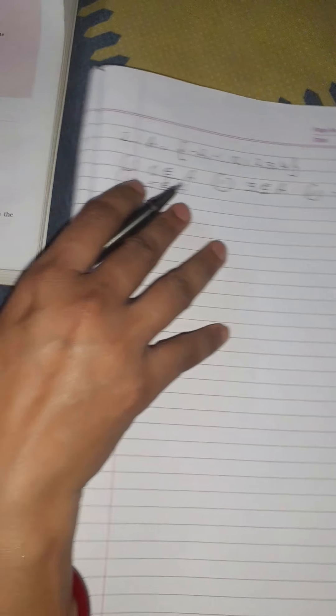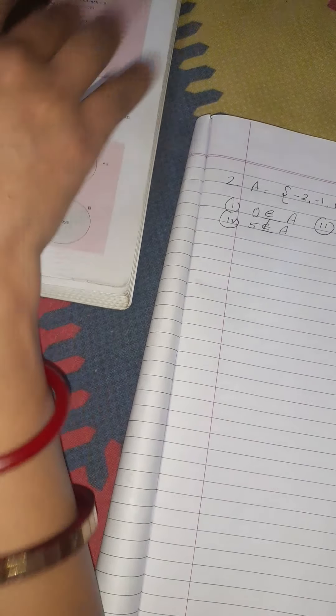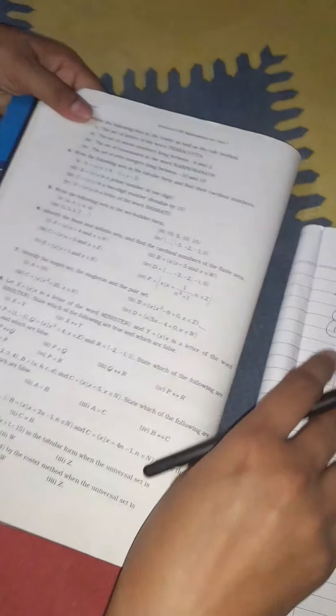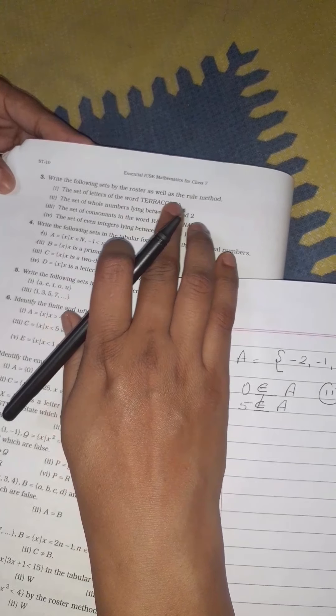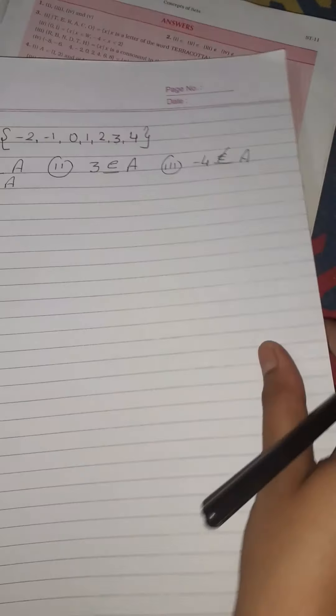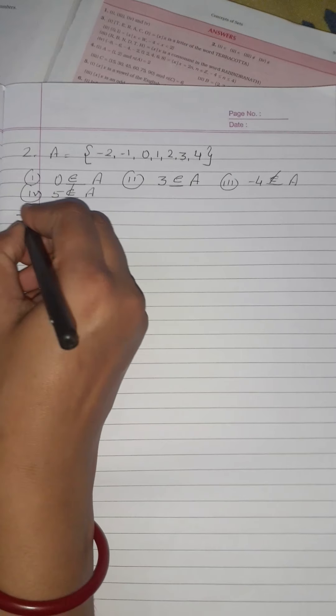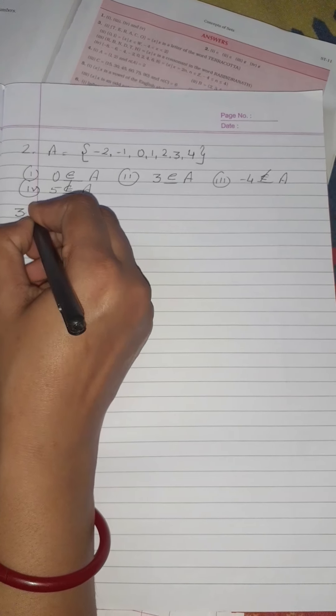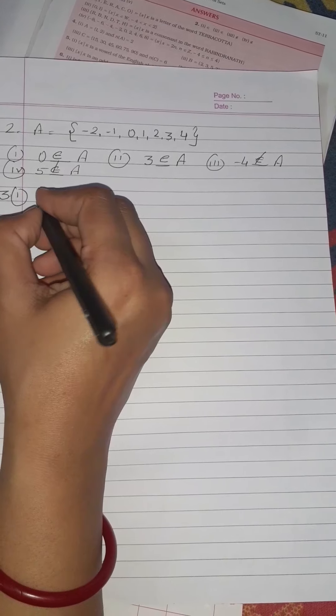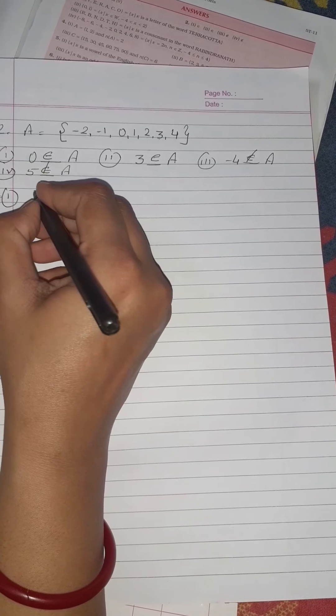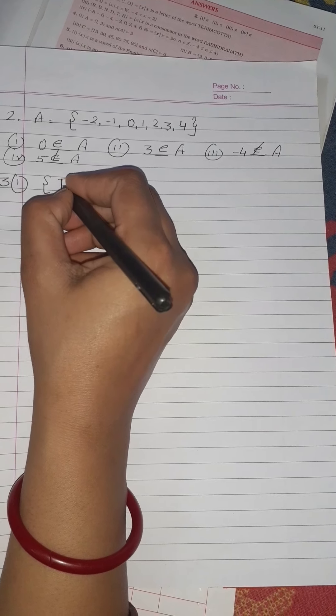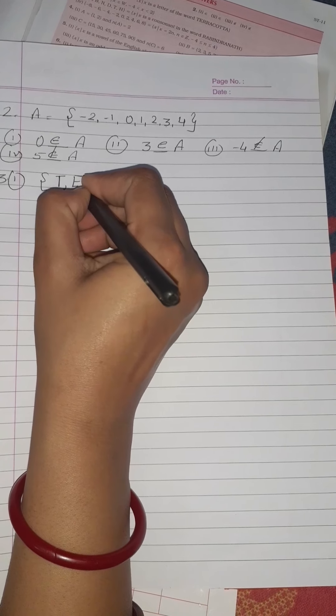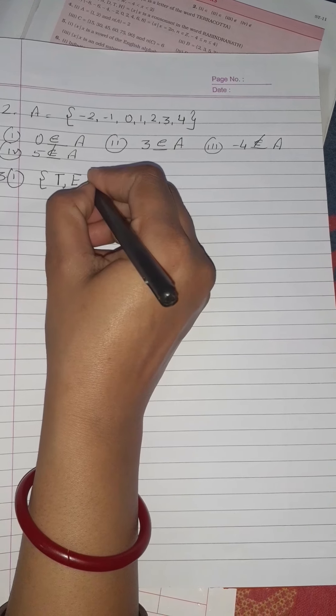Turn the page. Question number 3: Write the following sets by the roster as well as the ruler method. The set of the letters for terracotta. Let's start to frame a set: terracotta. First letter is T, E, comma R, don't repeat any alphabet.